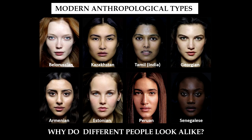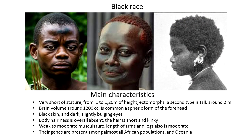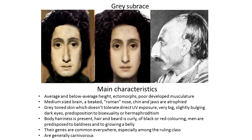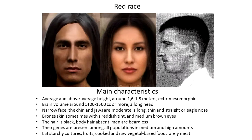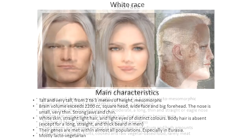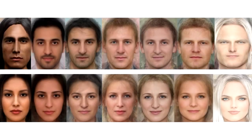Try to determine the phenotypes of others yourself. After some practice, if interested, it is possible to further advance in this. If we take as a basis the initial portraits of the six races, it is quite interesting to find how and from what elements any anthropological type was formed. Here are a few examples.